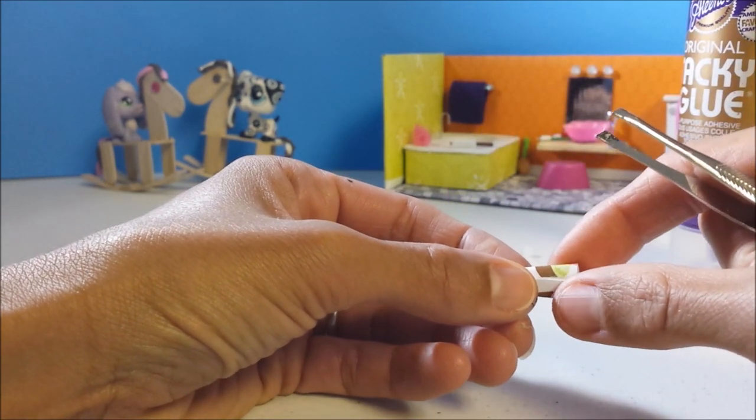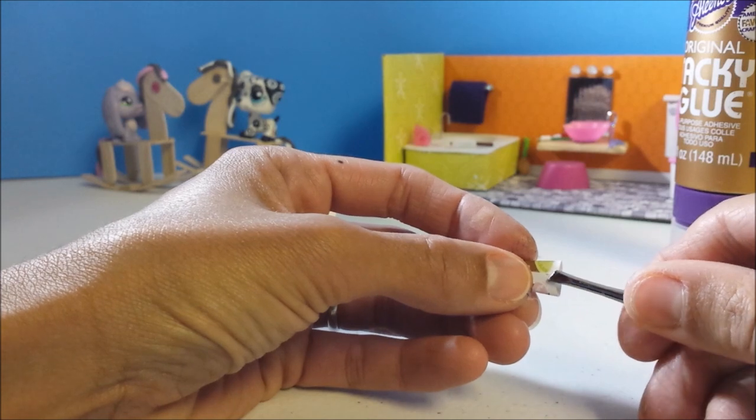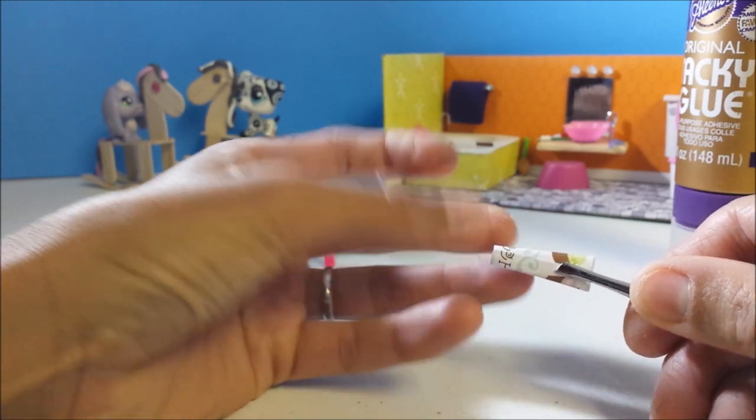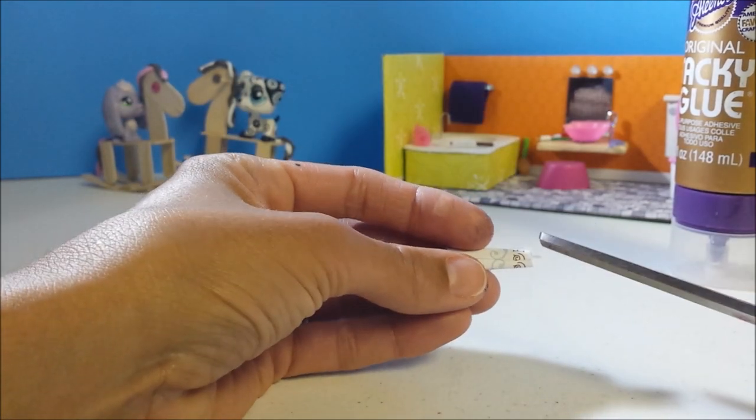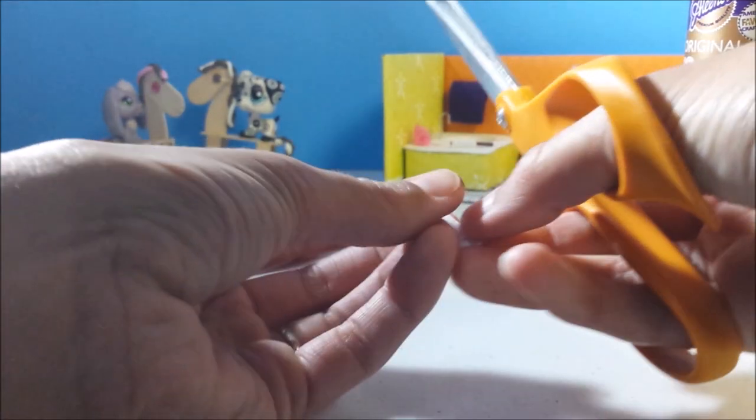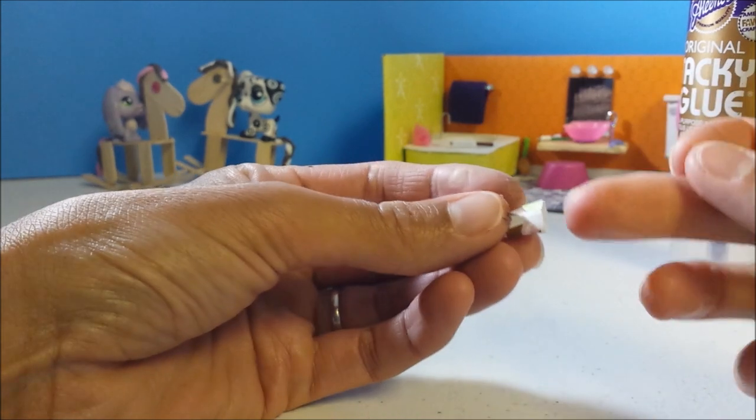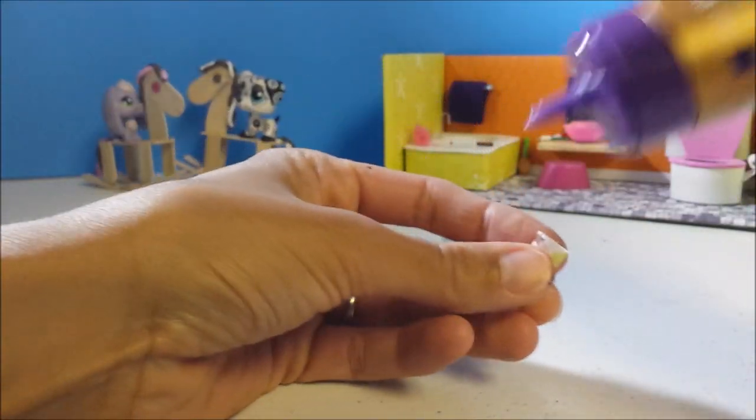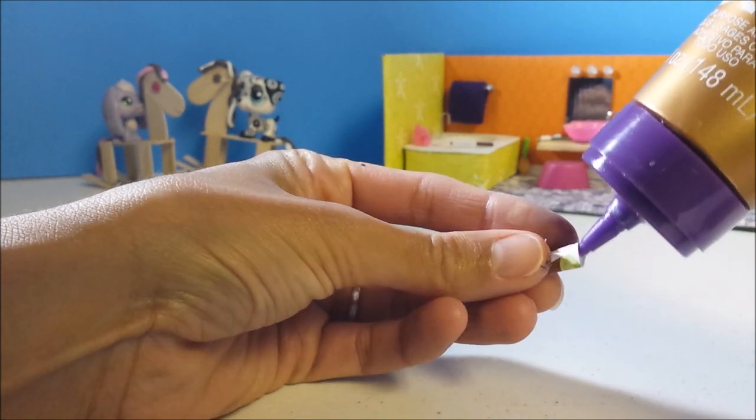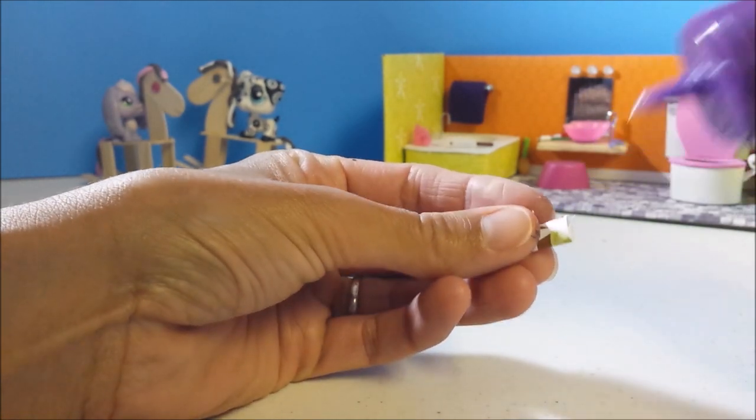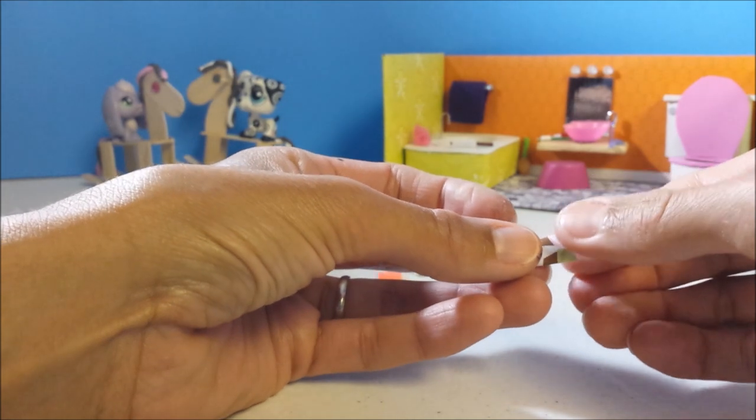If need be you can use tweezers. And then if it's not perfectly straight, trim. And the same with the top. Use a tiny bit of glue at the top. Just inside. Squeeze shut.